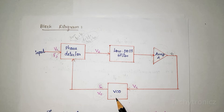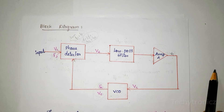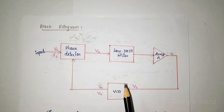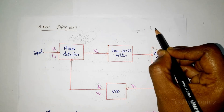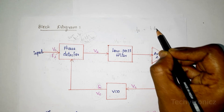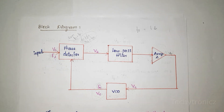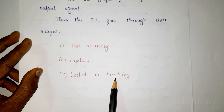Once this action begins, we say that the signal is in the capture range. The starting stage is the free running stage. When the control voltage shifts the VCO frequency in a direction to reduce the frequency difference, that is called the capture range. The VCO continues to change frequency until its output frequency exactly equals the input signal frequency (F0 = Fs), at which point the circuit is said to be locked. Once locked, the PLL tracks the frequency changes of the output signal. This PLL goes through three stages.